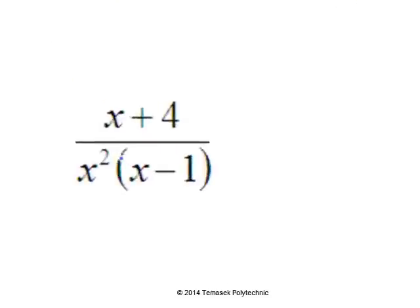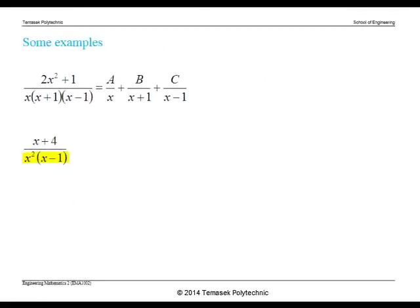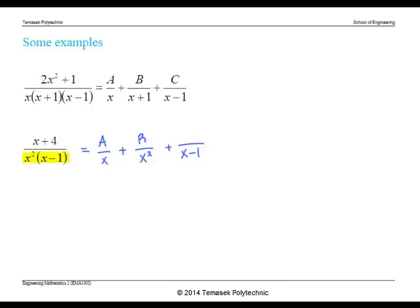Now consider the next expression. In this fraction, the denominators are x squared and x minus 1. So we should have partial fractions with denominators x squared and x minus 1. However, because x squared is a repeated factor, we need to include all factors with the lower degree — so we include x to the power 1. Then we apply constants to the numerators, labeling them a, b, and c.